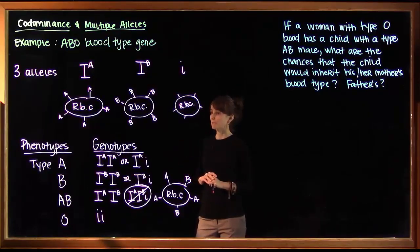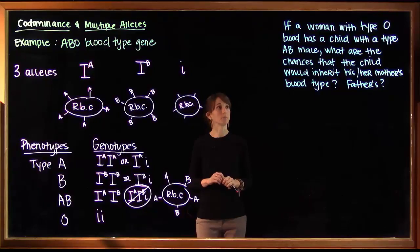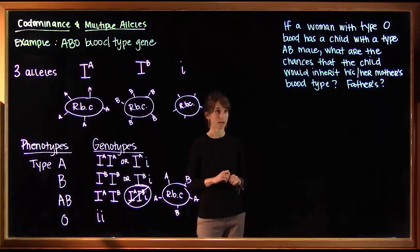Okay, now that we have our phenotypes and genotypes, let's try a practice problem. If a woman with type O blood has a child with a type AB male, what are the chances that the child would inherit his or her mother's blood type? And then what are the chances that the child would inherit its father's blood type?